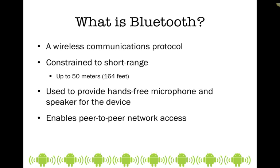Bluetooth is a wireless communications protocol constrained to a short range of 50 meters or 164 feet. It is basically a line-of-sight technology. If you start going through walls and doors and even heavy pieces of appliances and equipment, when you start to lose sight of the object, you start to deteriorate that communication connection. It's used a lot for things like microphones and speakers, and in cases of app development, you can use it for peer-to-peer network access — such as game technologies that use Bluetooth to play a game in the same physical space with somebody.